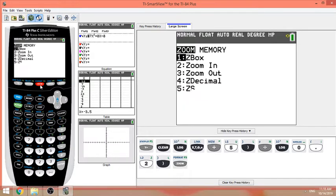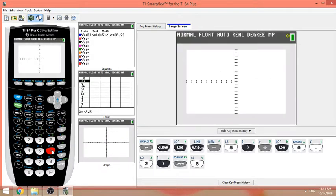And then you want to go to zoom, then standard. So this one just gives you the window from negative ten to ten on the x-axis. And for the y-axis, it's also giving you negative ten to ten.